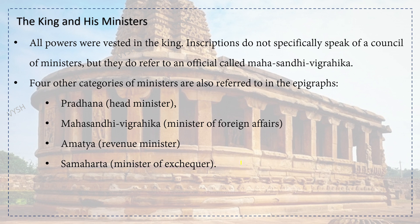The king and his ministers: all power was vested in the king. Inscriptions do not specifically speak of a council of ministers, but they refer to an official called Mahasandhi Vigrahika. Four other categories of ministers are also referred to in the epigraphs: Pradhana is the head minister, Mahasandhi Vigrahika is the minister of foreign affairs, Amatya is the revenue minister, and Samaharta is the minister of the exchequer.